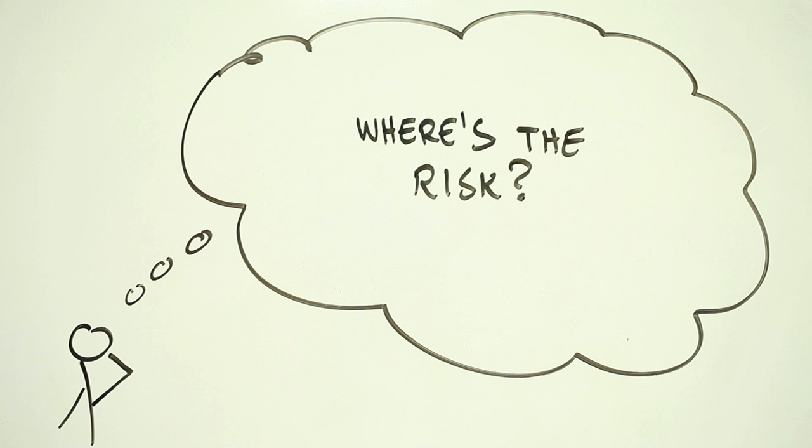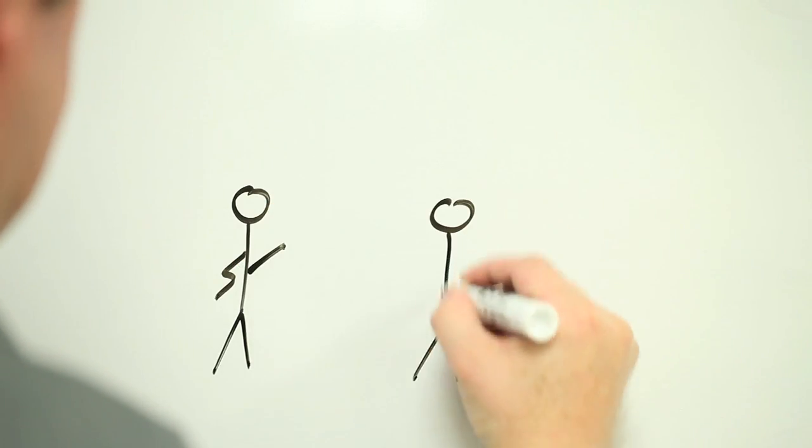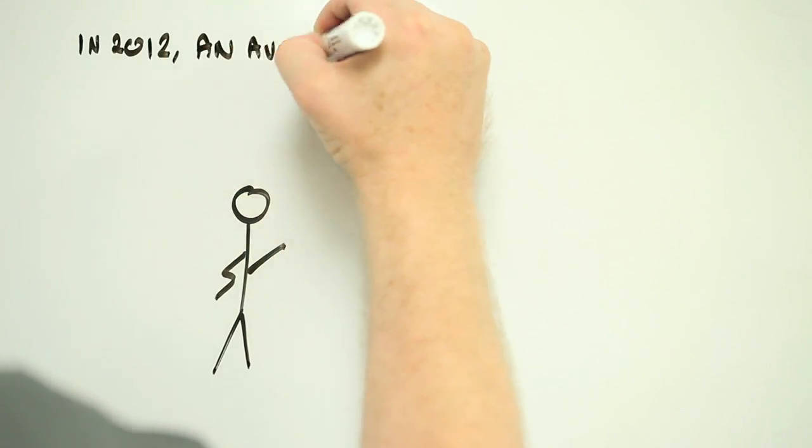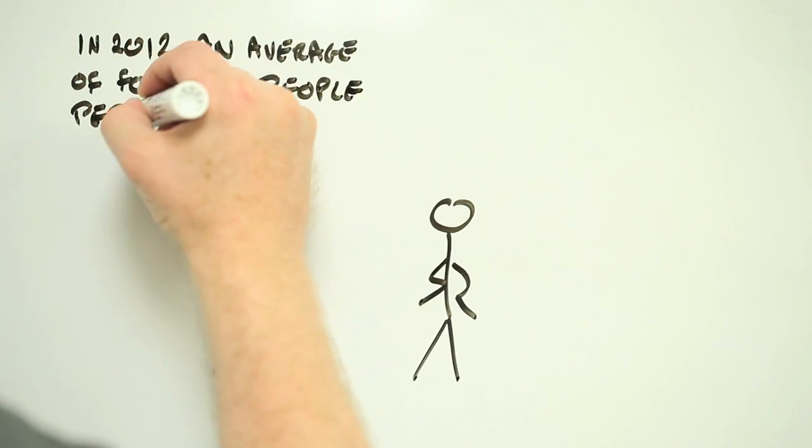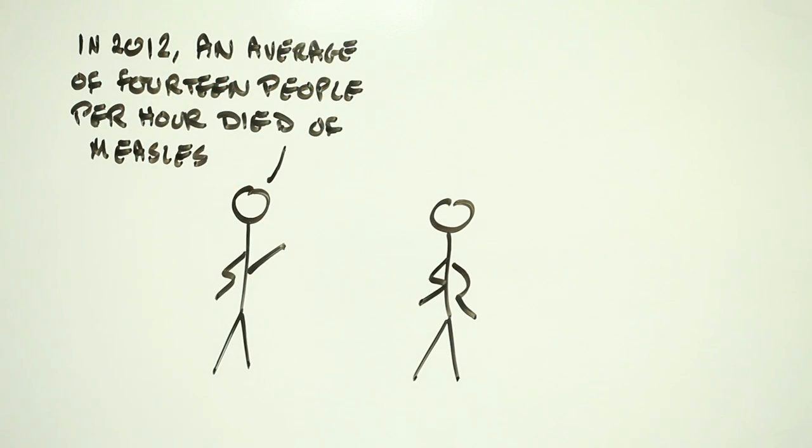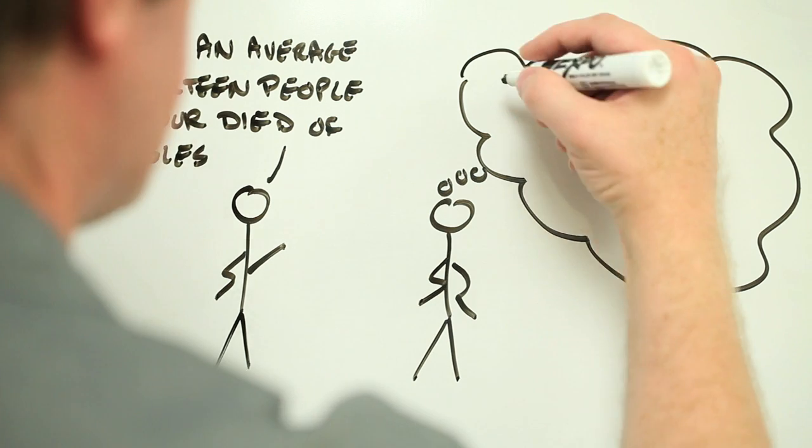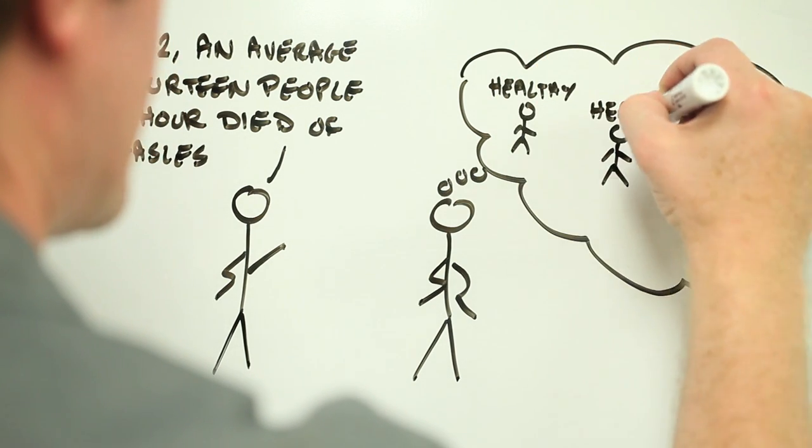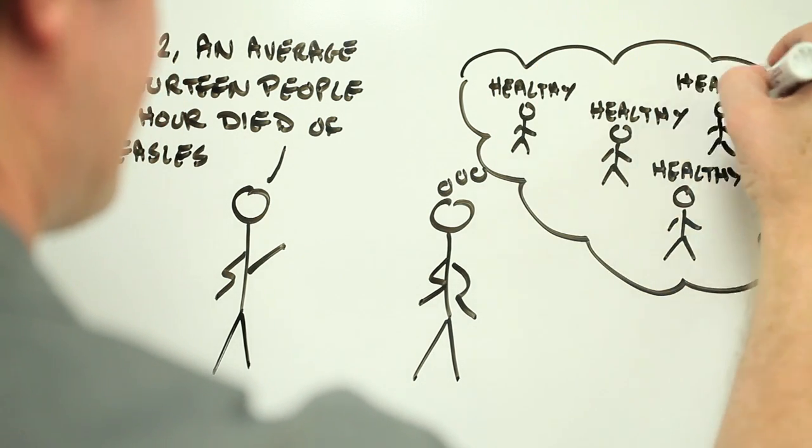This process is what psychologists call the availability heuristic. The strange thing is, the actual number, the statistics saying how many people get sick, don't tend to change this feeling. Numbers might change what we think consciously about risk, but more often it's that availability heuristic that shapes our feelings about risk.